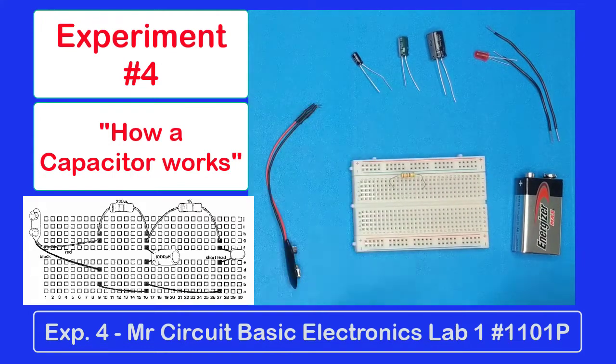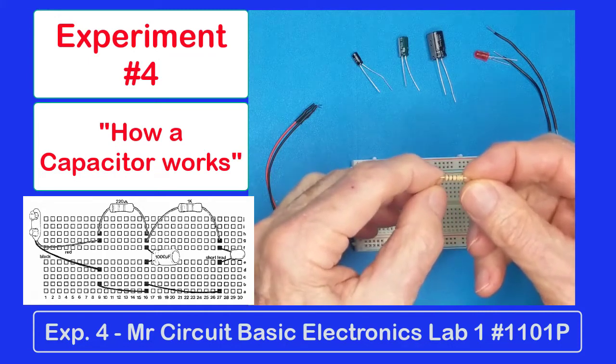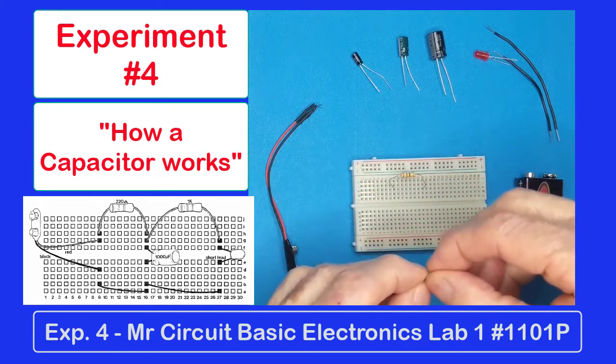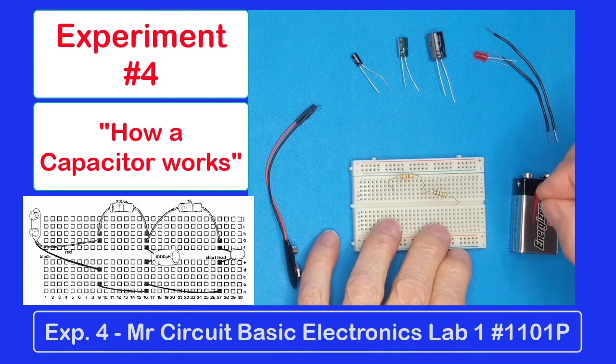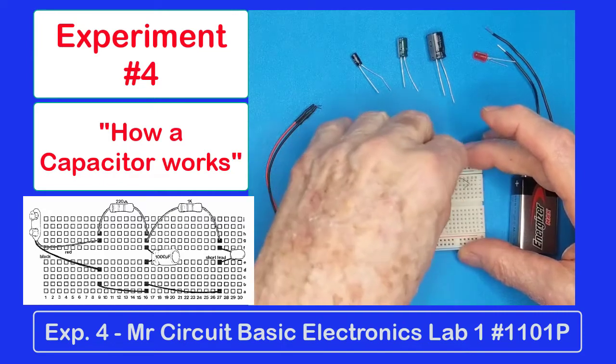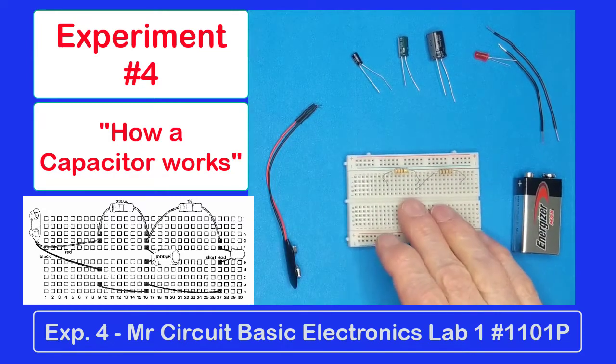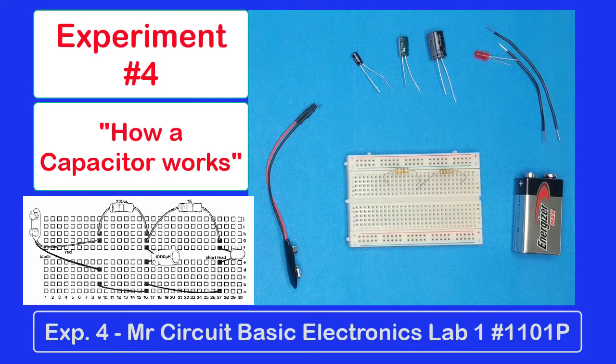Red, red, brown is 220. And this one is brown, black, red. So that's the 1,000 ohm. So the 1,000 ohm needs to go over here and plug in to number 27. So we have our two resistors installed according to the pictorial. You see how easy it is to make a mistake? Make sure that you read the color bands.